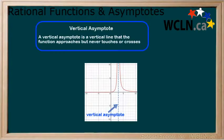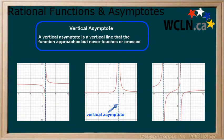A vertical asymptote is a vertical line that the function approaches but never touches or crosses. Here are a few examples of vertical asymptotes.